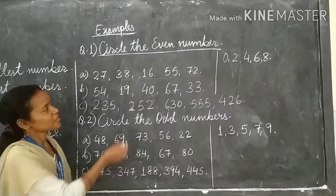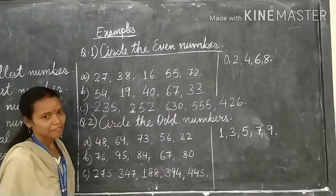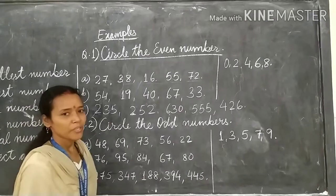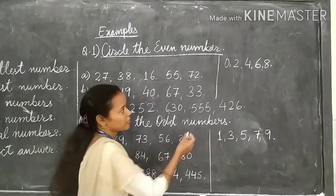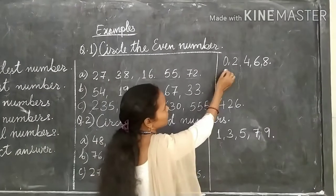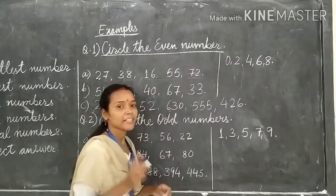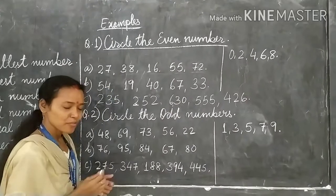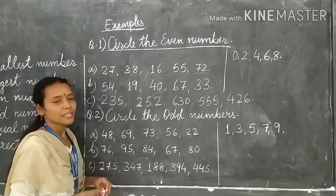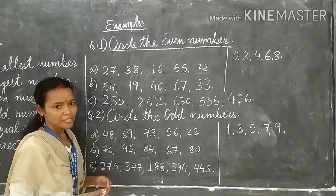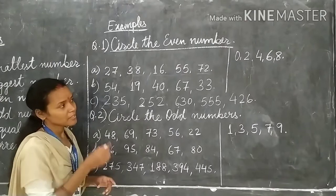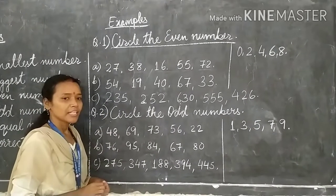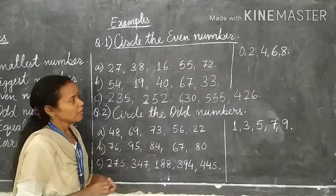Question number 1 is circle the even numbers. As I have taught you children, whenever we find 0, 2, 4, 6 and 8 in the place of 1's, that number is always an even number. Numbers which end with 0, 2, 4, 6 and 8 are even numbers.